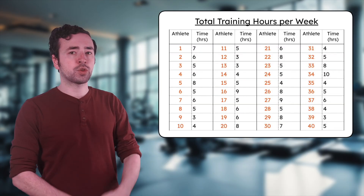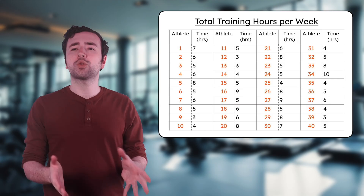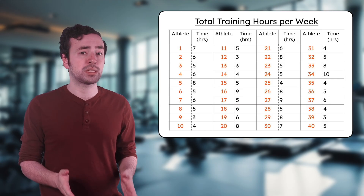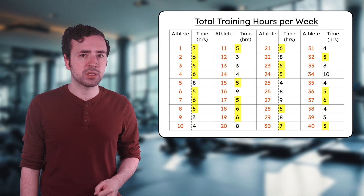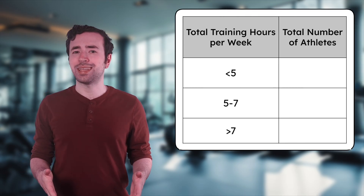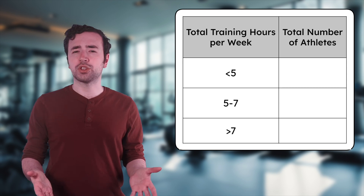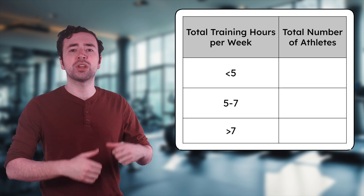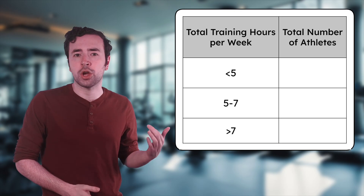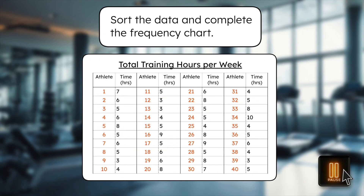We'll continue building our training guide by investigating the total time athletes spend training each week across running, biking, and swimming. This will help us determine how many hours future athletes should commit to training for each part of their race. Here's a list of weekly training hours from a group of 40 athletes. Let's try grouping the data into categories: less than five hours, five to seven hours, and over seven hours. We'll organize this data into a frequency chart — a table that lists values or categories alongside the number of times each one occurred. Pause here to sort the data and complete the frequency chart in your guided notes.